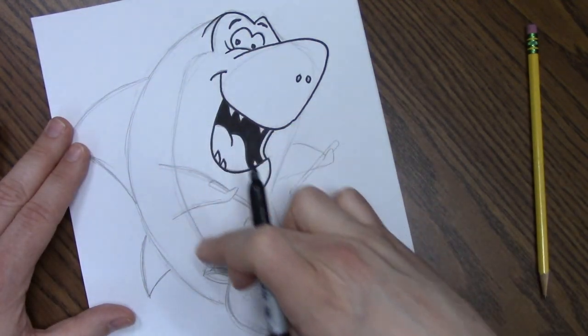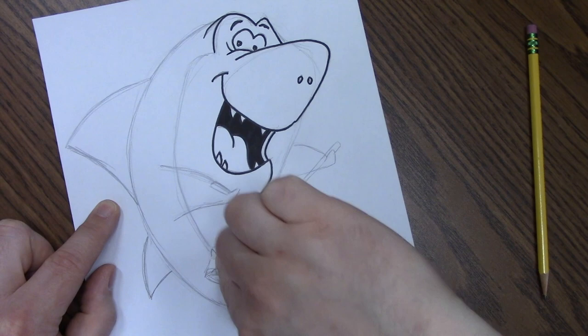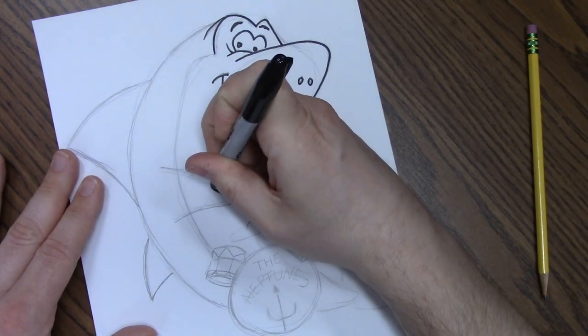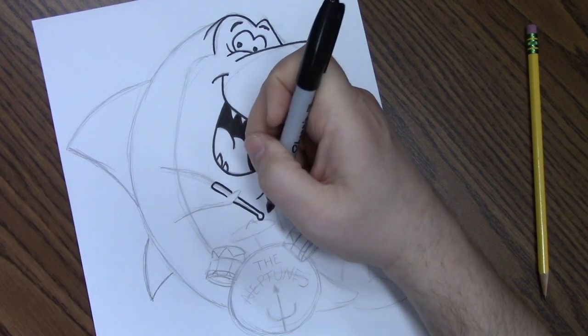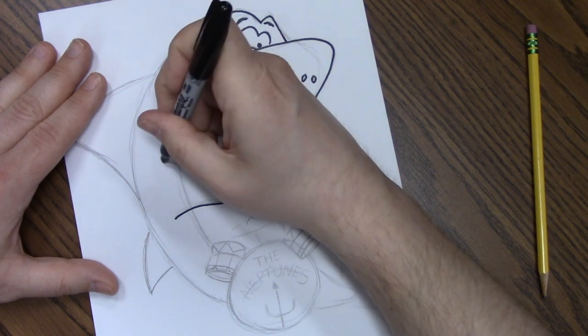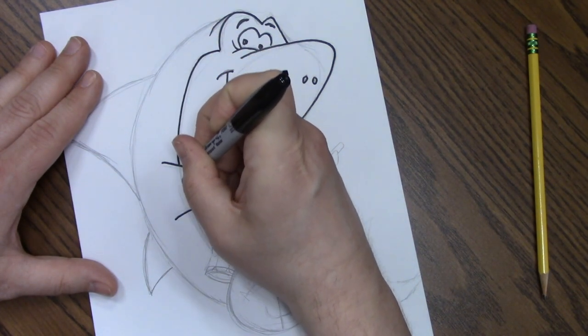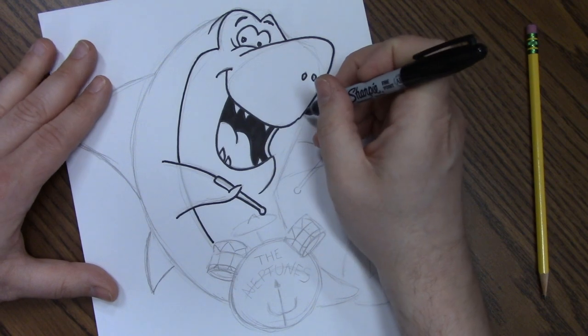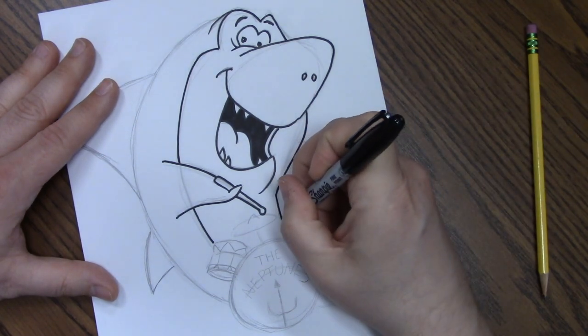All right. Before we do this long line here, let's get this fin done, because the fin is going to be cutting off that line. So we don't want to accidentally ink all the way down when the fin is going to be in front of that line. So after we're done inking, we're probably going to erase this line. So let's put in the drumstick. Then the fin holding the drumstick. Okay. And now we can do this line. Skipping that and going the rest of the way down.